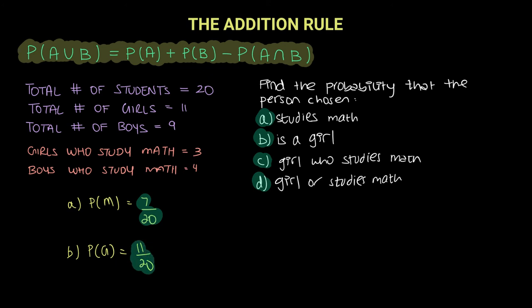So these two were easy. Now let's have a look at part C. Probability that the person chosen is a girl who studies math. A girl who studies math.